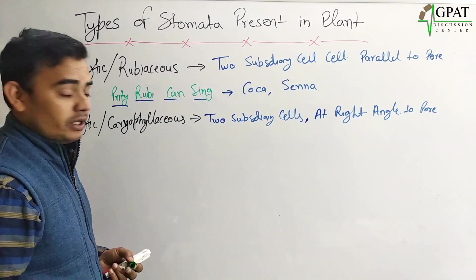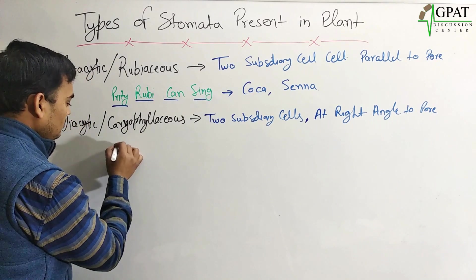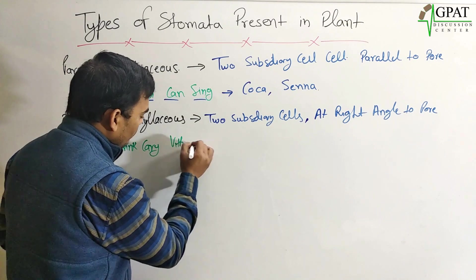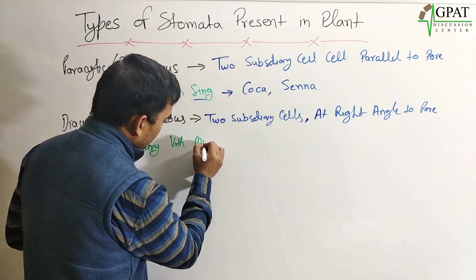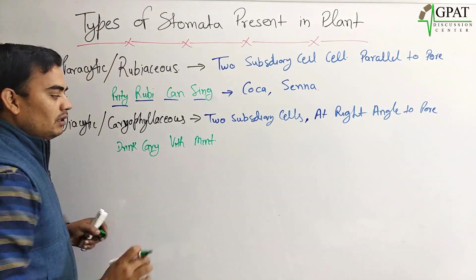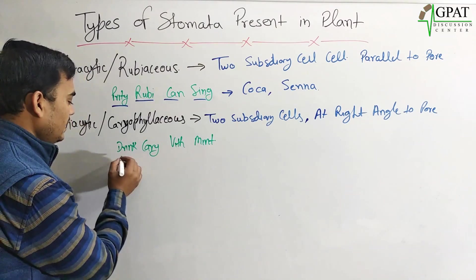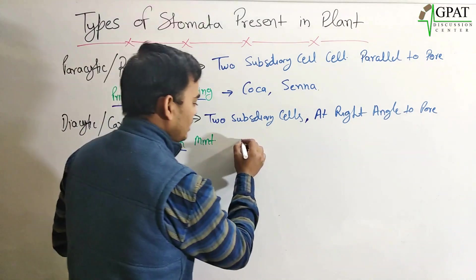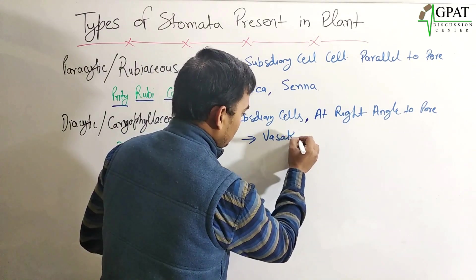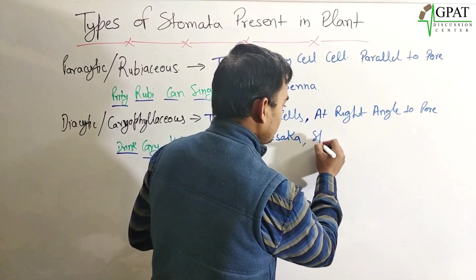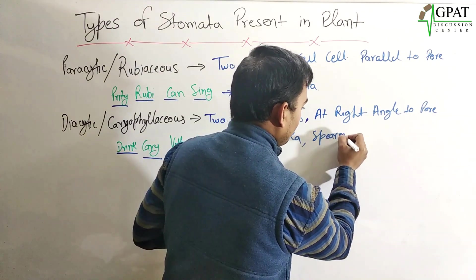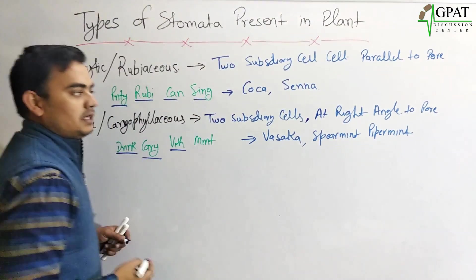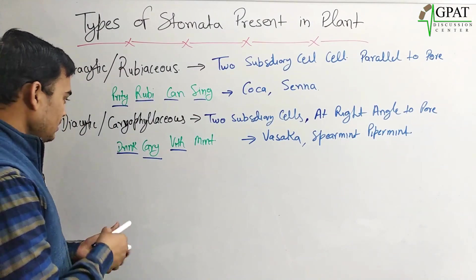The trick for diacytic stomata is: 'Anemone, drink Cari with mint.' Here, 'drink' stands for D — diacytic; 'Cari' for Caryophyllaceous; 'V' (changing W to V) example is Valleseca; 'mint' for Spearmint; and 'peppermint' as additional examples. These are the examples of diacytic stomata.